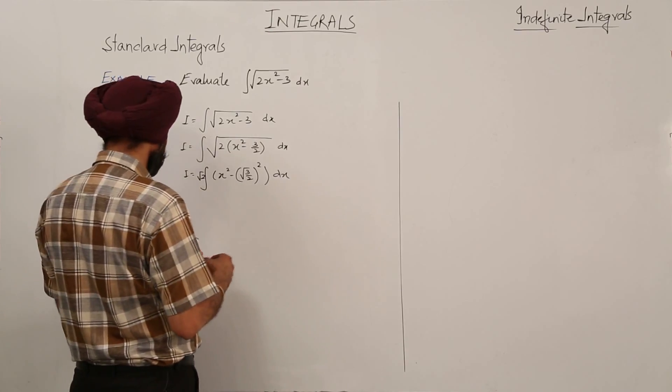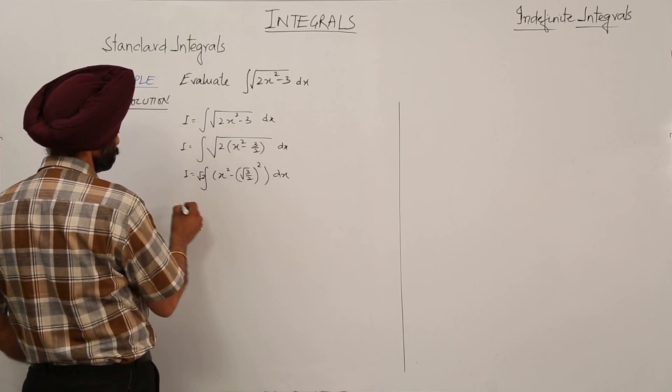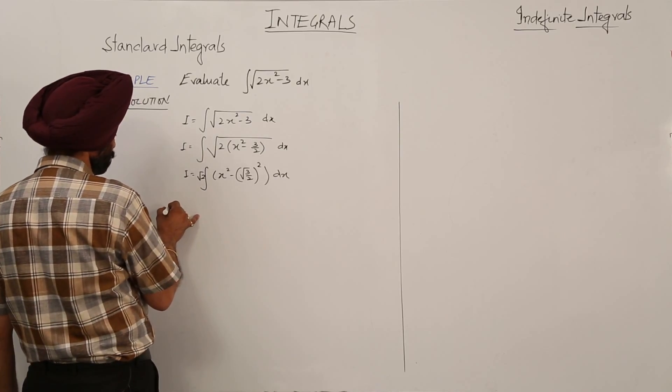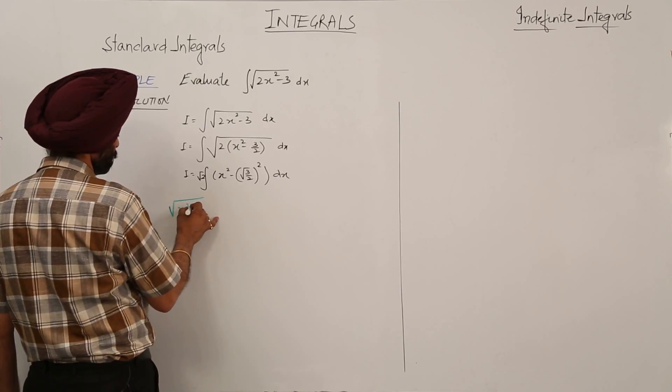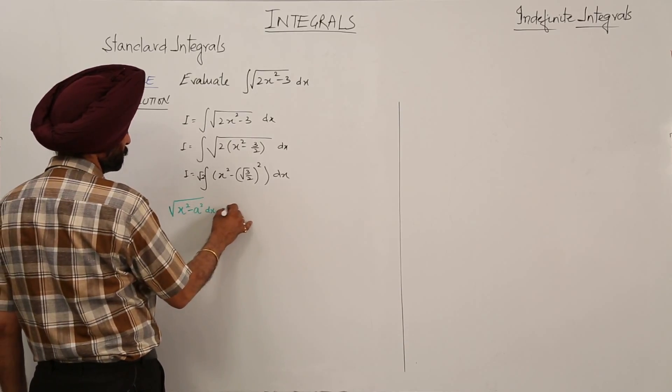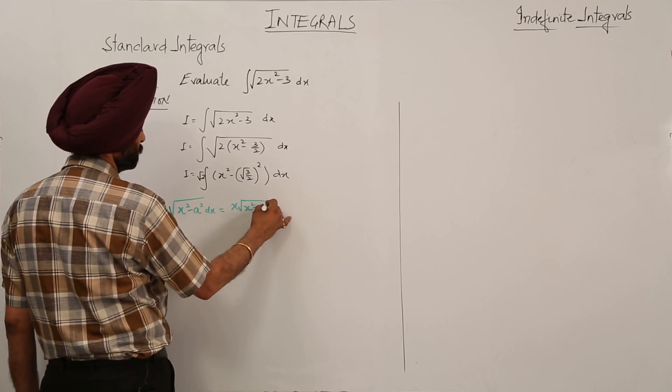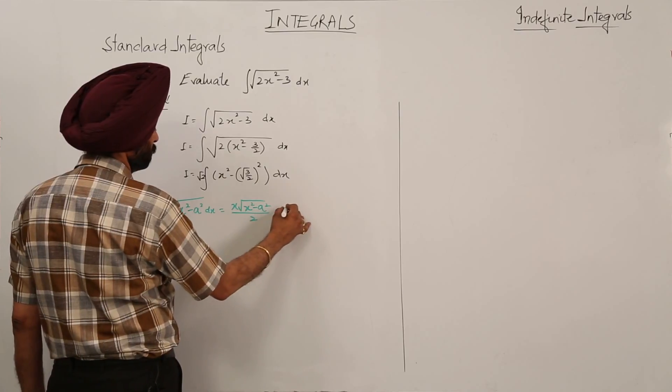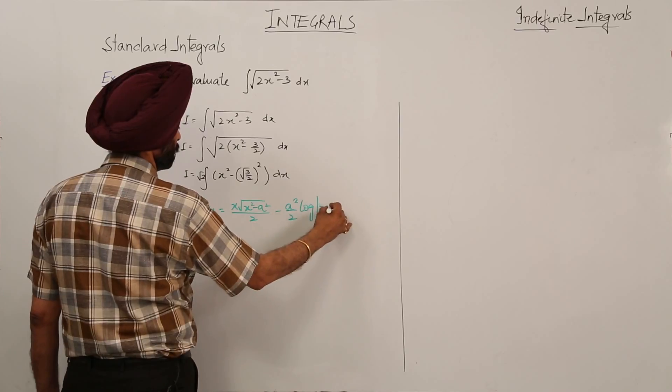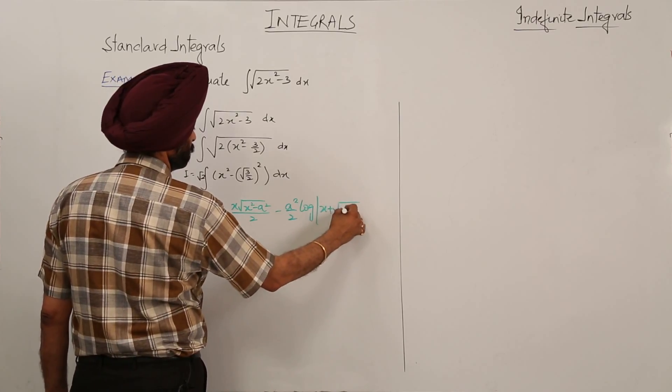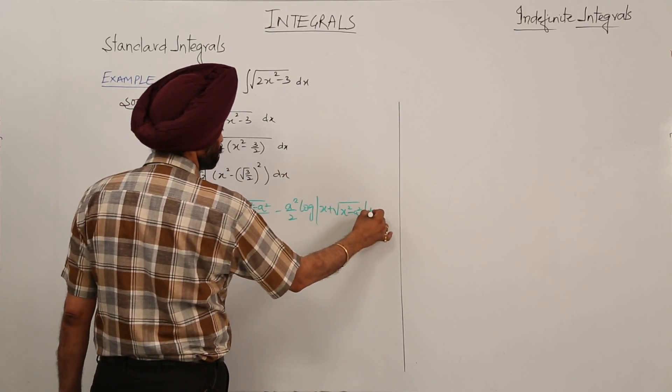So now which formula we are going to use? The formula is: integration of x square minus a square dx equals x square root of x square minus a square upon 2 minus a square upon 2 log x plus square root of x square minus a square plus c.